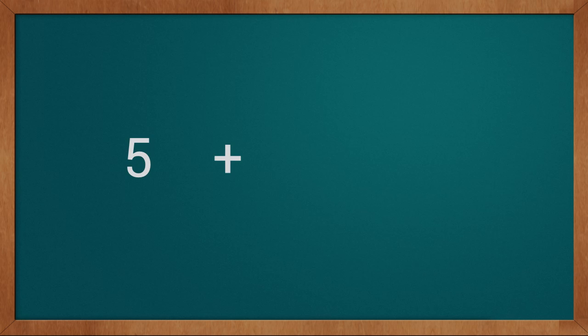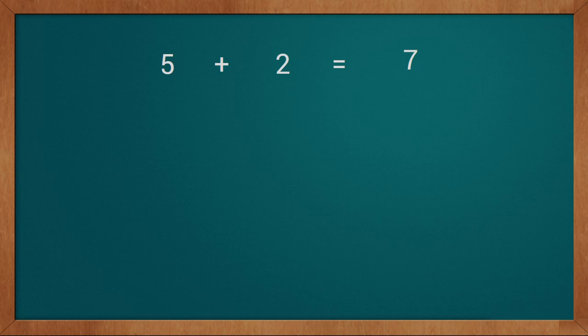First we will take an example of addition. Our problem is 5 plus 2 equals 7. We will solve our problem 5 plus 2 equals 7 with the help of a number line.